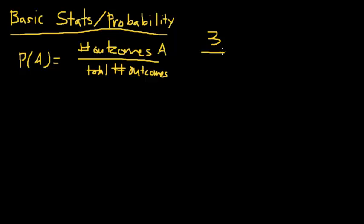And there's six total outcomes, 1, 2, 3, 4, 5, and 6. So the probability of rolling an odd number is 1 half.